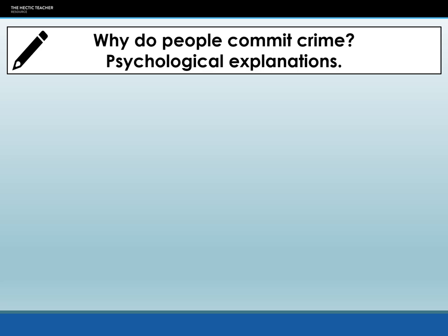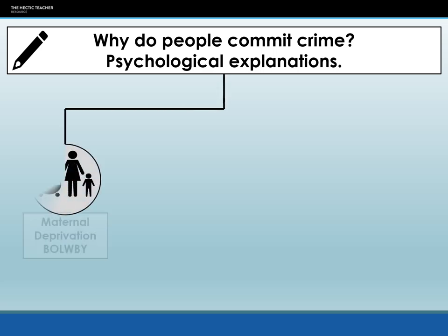One way that society tries to explain criminal and deviant behavior is by looking at psychological issues. Remember, you will not be examined on this, but it will give you some background and alternative theories. The first theory is put forward by Bowlby, who suggests that one of the reasons why people commit crime is due to maternal deprivation — that criminal behavior is linked to a lack of motherly love at a young age. A strong, warm, and healthy relationship with a mother figure is necessary for good psychological development; without this, children can become delinquents and suffer affectionless psychopathy, where they do not feel remorse.